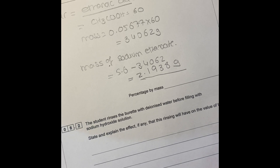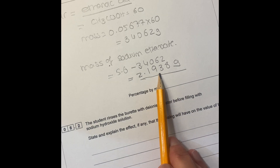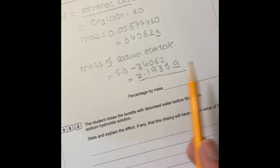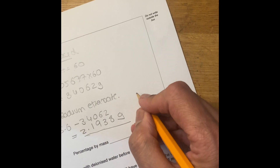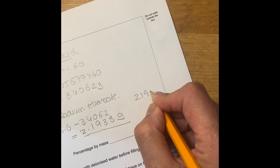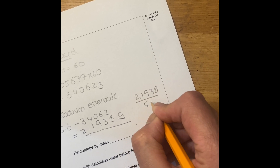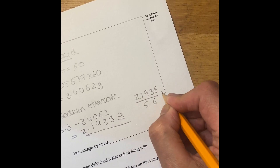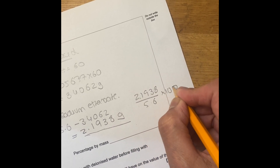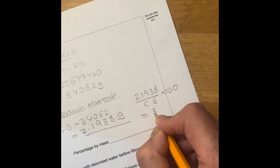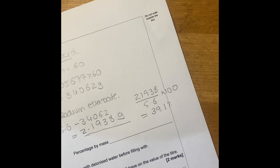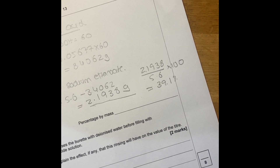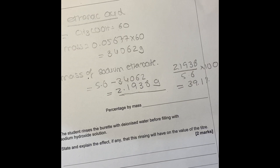To work out the percentage by mass of sodium ethanoate, take 2.1938 divided by 5.6 times 100. The percentage by mass of sodium ethanoate is 39.1%. That's how you do this question.